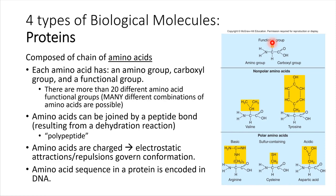That sequence is encoded ultimately in the DNA, and then once that sequence is connected up together — once we've got a chain of amino acids connected together — what will happen is the electrostatic attractions and repulsions will help to fold that protein into its three-dimensional shape. And for proteins, that 3D shape is really key.